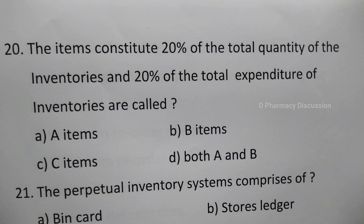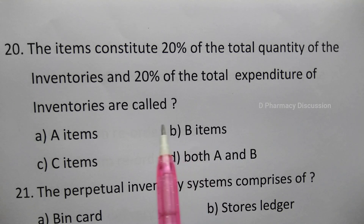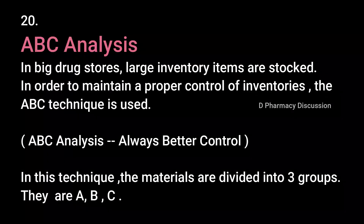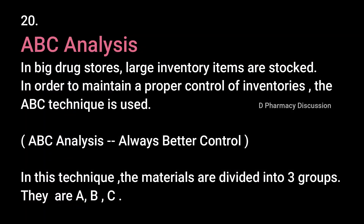Question 20: The items that constitute 20% of the total quantity of inventories and 20% of the total expenditure of inventories are called — option A: A items, B: B items, C: C items, D: both A and B. The correct answer is option B, B items. In large drugstores, the ABC technique is used to maintain proper control of inventories. ABC analysis means Always Better Control analysis, where materials are divided into three groups: A, B, and C.